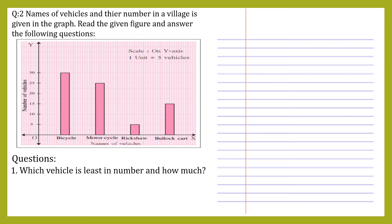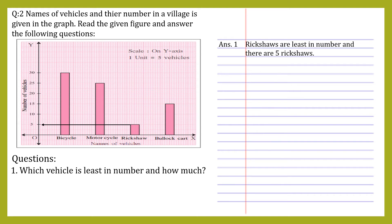First question: which vehicle is least in number and how many? To find the least, we look for the smallest rectangle. The arrow pointing towards the y-axis points to five. So rickshaws are least in number, and there are five rickshaws.